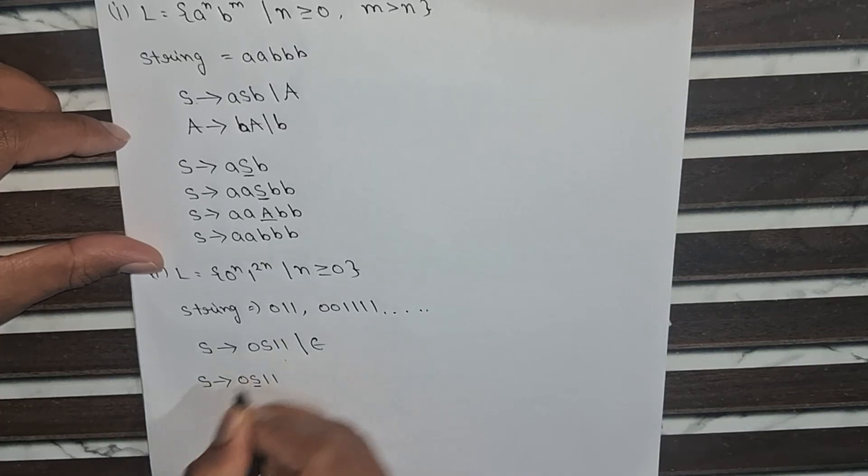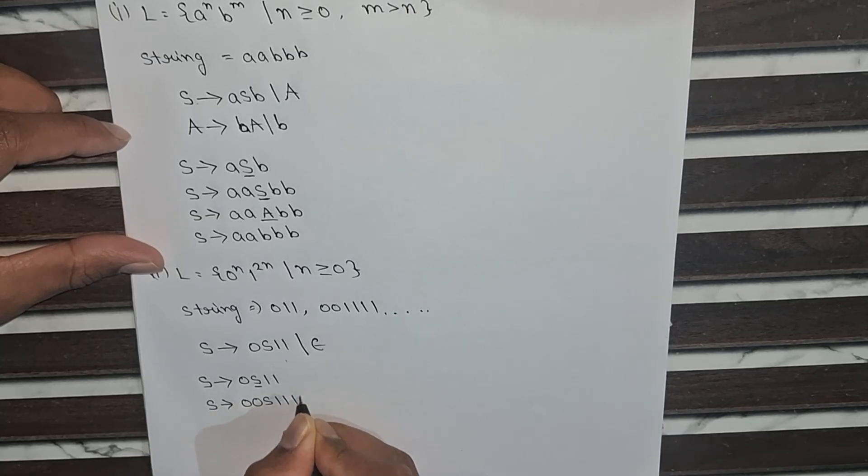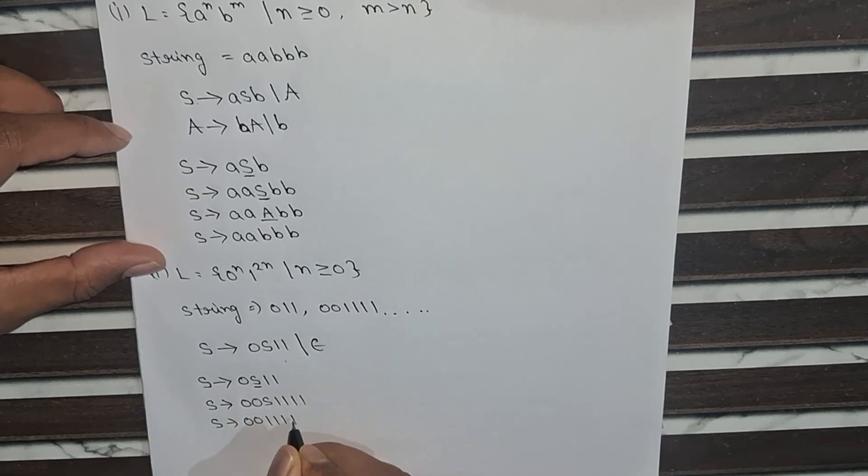Now we will substitute S again this. Then we will get 0 0 S 1 1 1 1. Now we will substitute S as epsilon. Then we will get the string which we want to prove.